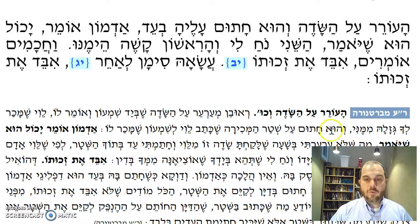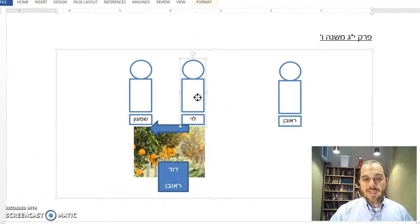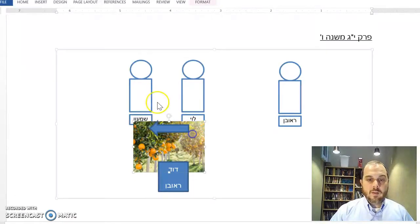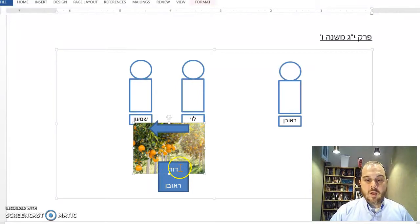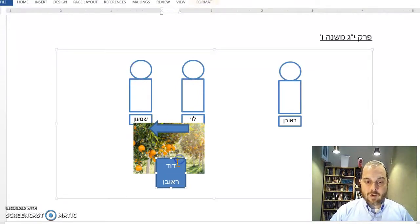But Reuven is chatum al shtar mechira she'katav Levi le'Shimon. Let me show you the chart. Levi sold the field to Shimon, and when Levi sold the field to Shimon, on the shtar, Reuven is signed on the shtar.